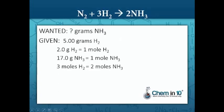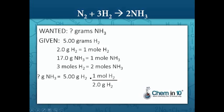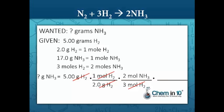Now we have everything we need. We set up our problem: question mark grams of ammonia equals five grams of hydrogen. We cancel out grams of hydrogen first using the molar mass of hydrogen: two grams of hydrogen equals one mole of hydrogen, and the grams cancel out. Once we have moles of hydrogen, we convert to moles of ammonia: three moles of hydrogen equals two moles of ammonia, and moles of hydrogen cancel out. Then to get grams of ammonia, one mole of ammonia equals 17 grams, and the moles of ammonia cancel out.